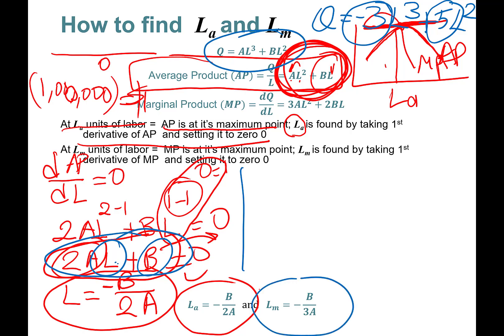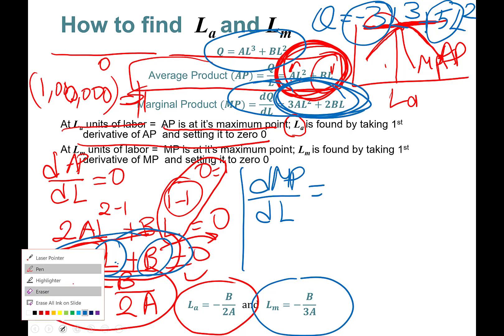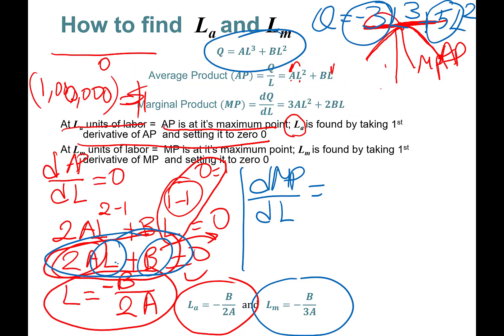Now we're going to find the point at which the marginal product curve starts declining. This is really easy — I'm just going to take the first derivative of the marginal product curve with respect to labor, taking the derivative of 3aL² + 2bL.